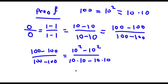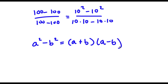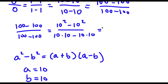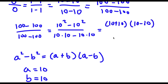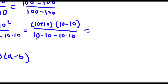Now if I have something in the form a squared minus b squared, this is equal to (a + b)(a - b). So in this case a is 10 and b is 10 as well. So this is going to equal (10 + 10)(10 - 10) in the numerator over 10 times 10 minus 10 times 10.